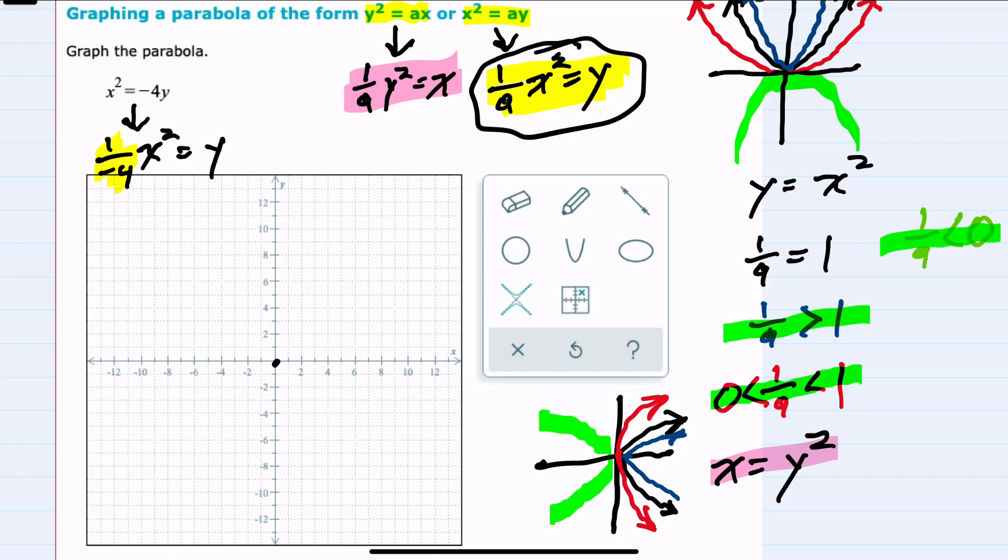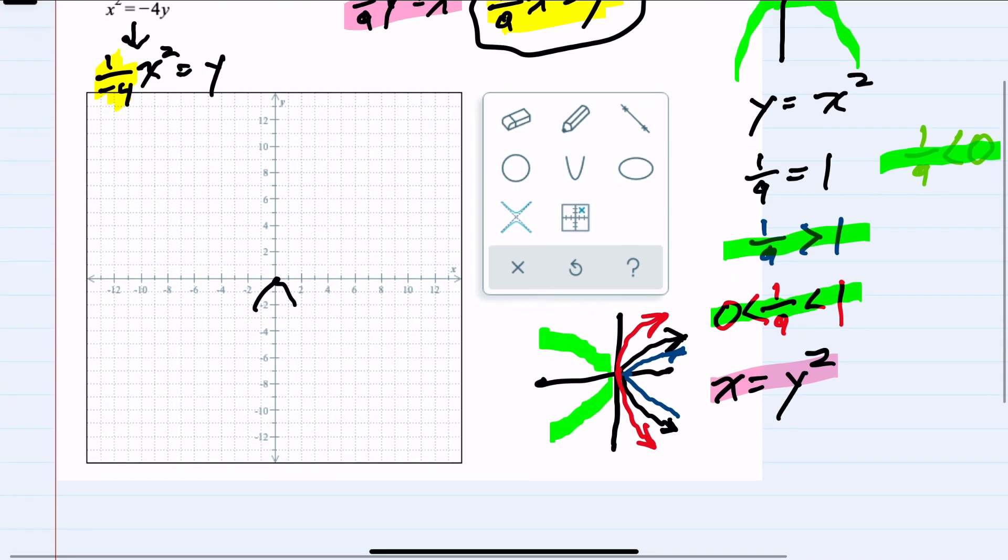These are the parabolas that open up and down. This is negative, so it is going to be opening down. To determine how steep it's going to open up and down, I'm going to plug in a couple of values.